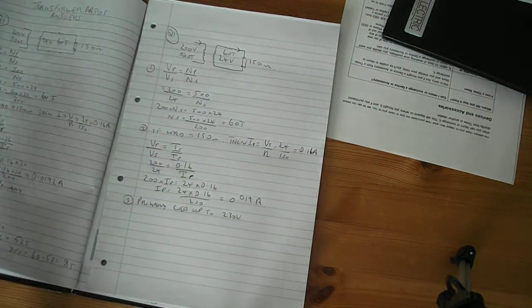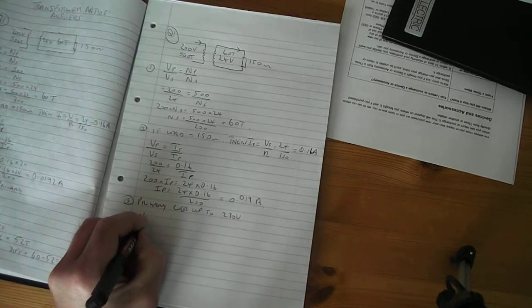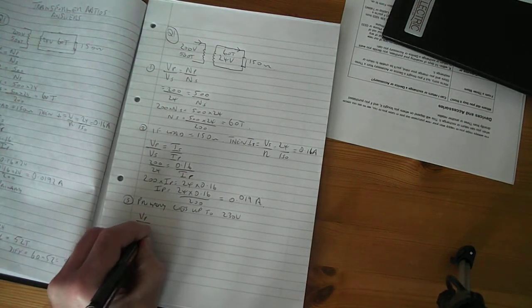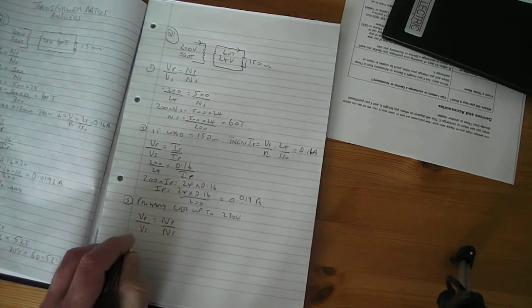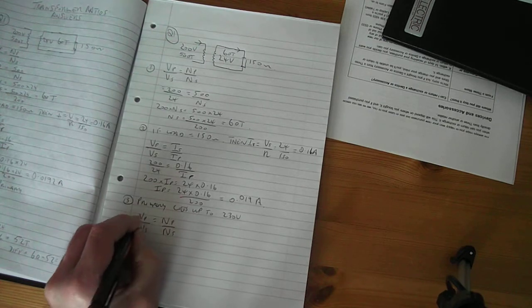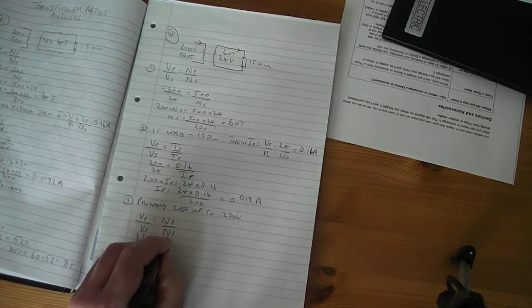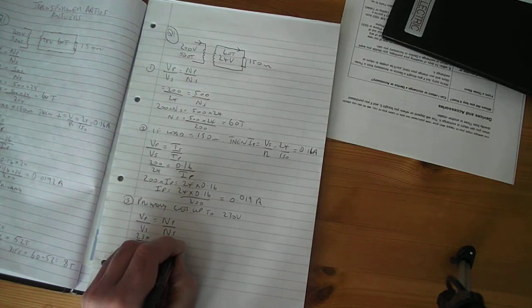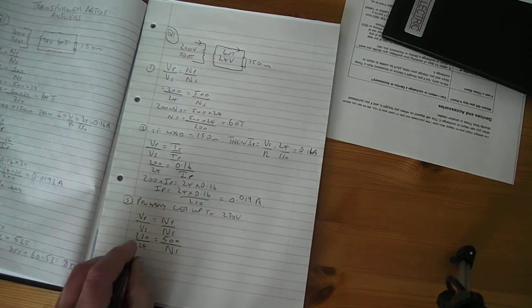So therefore, the new formula you're going to use is the same one as this one. V primary over V secondary equals N primary over N secondary. Put the figures in. The new primary voltage is 230 volts, secondary voltage is 24, numbers of turns on the primary stays at 500, and we're trying to find the new secondary turns.